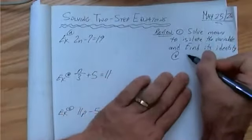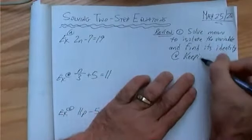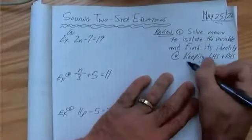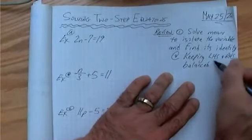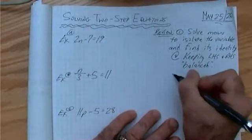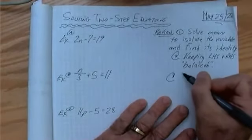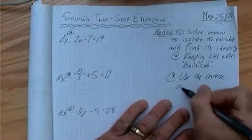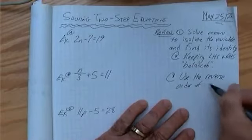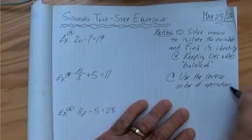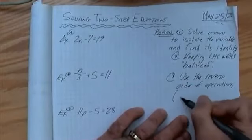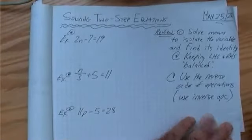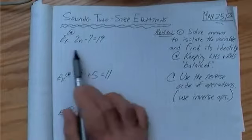The way we're going to do that is by keeping the left hand side and right hand side balanced or we could say equal. You remember that from the videos in the past. And the last thing we're going to do is we're going to use the reverse order of operations. Or in other words, we're going to use inverse operations to separate the variable from all the other numbers that are in here.